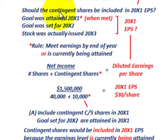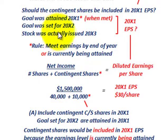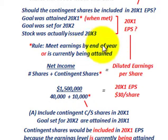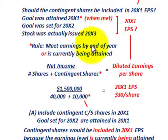To review: Corporation B had to earn income above a set amount in year 20x2. Corporation B actually attained that goal in the earlier year 20x1, but the shares wouldn't be issued to Corporation B's shareholders until year 20x3. Based on our rule, when you meet the earnings by the end of the year or those goals are currently being attained, you include the contingent shares in the year they are being attained. That concludes our discussion on diluted earnings per share based on contingent shares of stock under contingent issuance agreements.